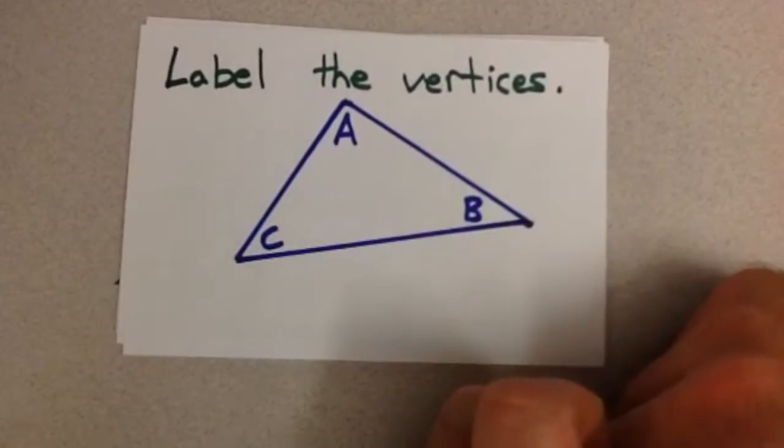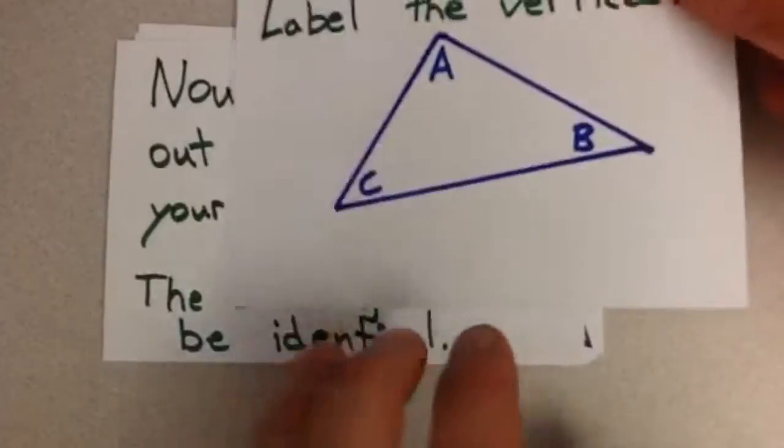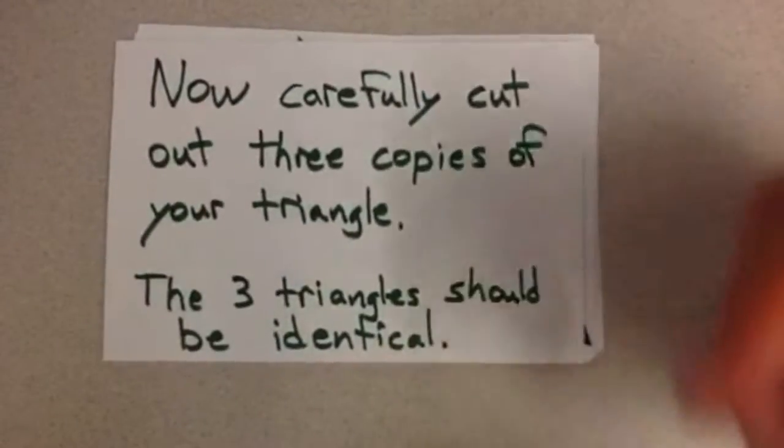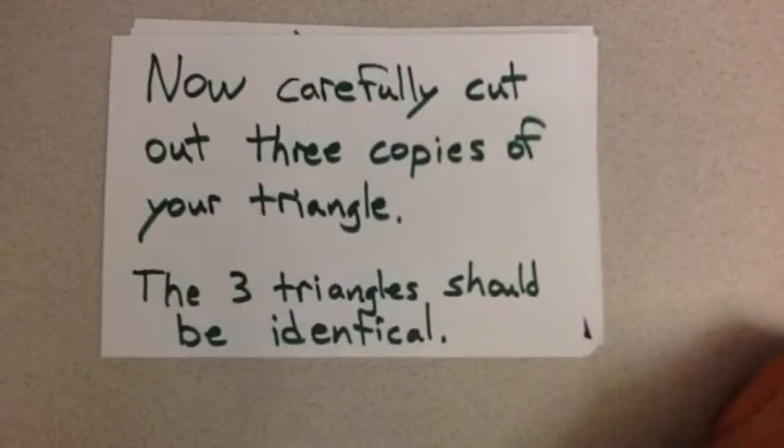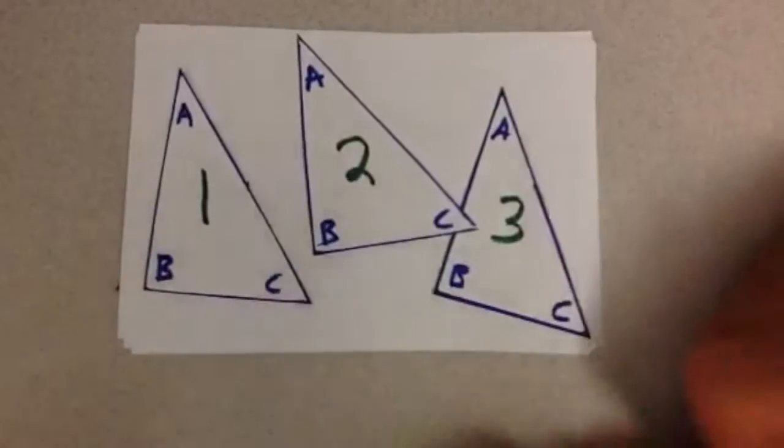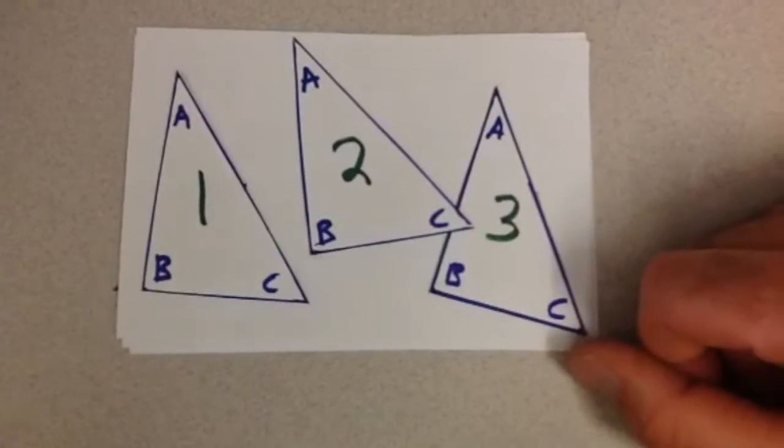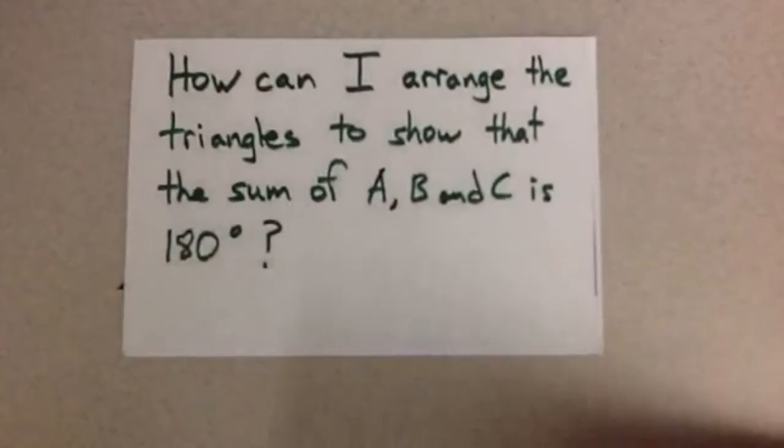Next, label the vertices A, B, C because we are very creative. Now carefully cut out three copies of your triangle. The three triangles should be identical like these three triangles that I cut out. Next, you have to think about this.